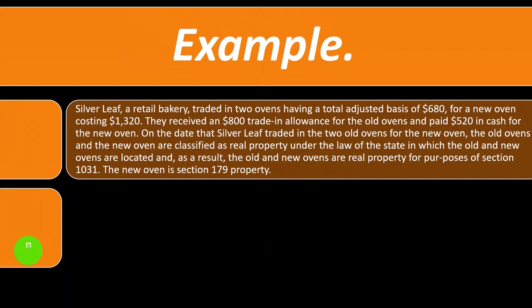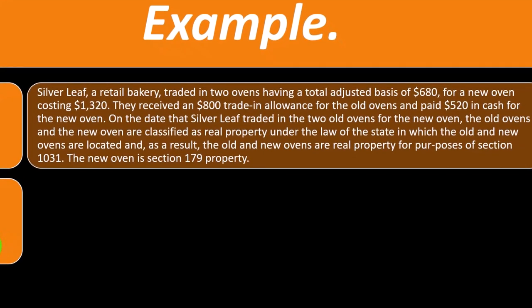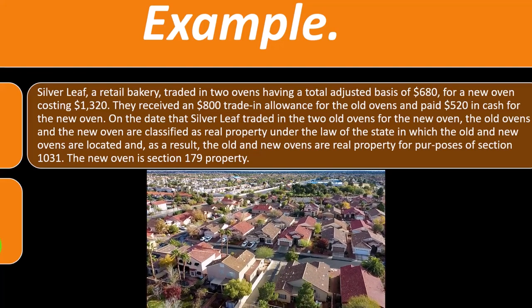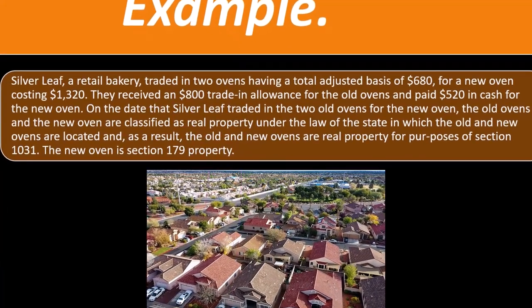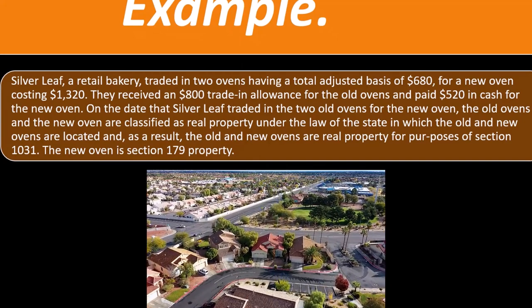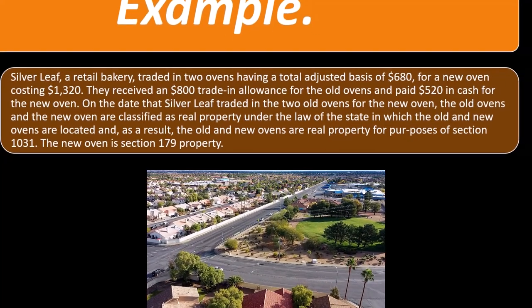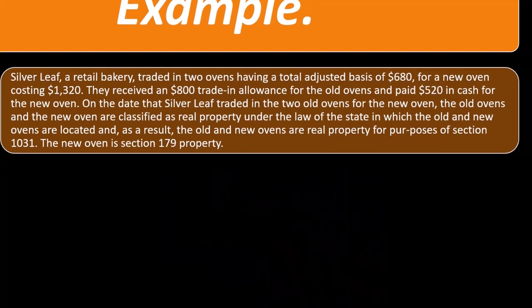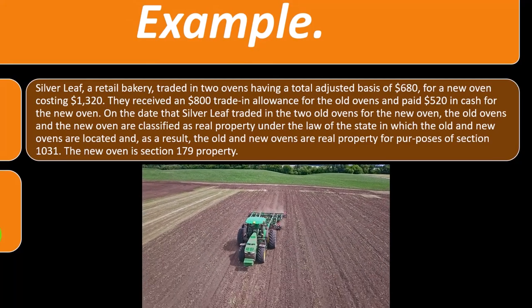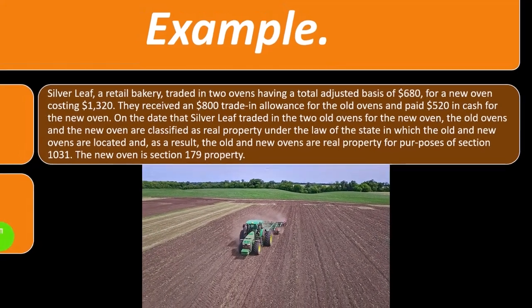On the date Silver Leaf traded in the old ovens, both old and new ovens are classified as real property under state law, making them real property for purposes of Section 1031. This gets tricky because whether something is real property — part of the building — or separate equipment matters. If it's real property you might qualify for a 1031 exchange; if it's classified as equipment, you may be able to depreciate it faster with accelerated depreciation like Section 179.